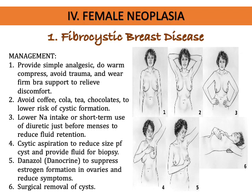Breast self-examination should be performed one week, or seven to ten days, after the first day of menstrual flow — by then menstruation is complete and the body is not congested. Annual breast ultrasound is also important, especially for women at high risk of breast cancer such as those with a family history. Mammography is an x-ray and is contraindicated during pregnancy.